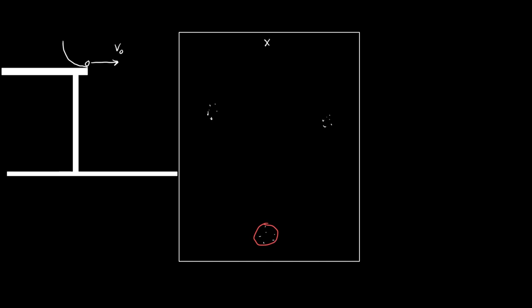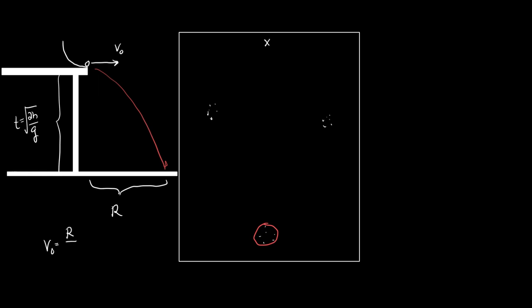If you remember projectiles: if you know the height, you can figure out how long it took the ball to reach the ground. By measuring the range, you could figure out V0 by doing range divided by T. However, the height is the same for all the balls, so T is the same for all of them. That means we can just compare the ranges and say that is the same as comparing the velocities.